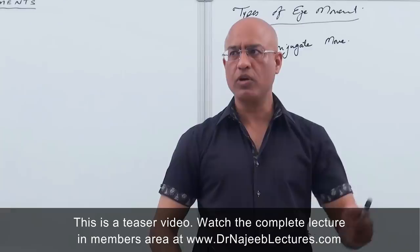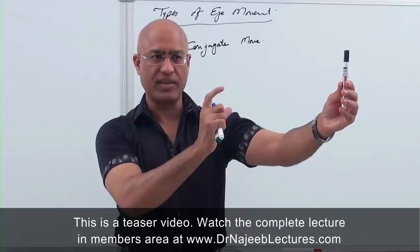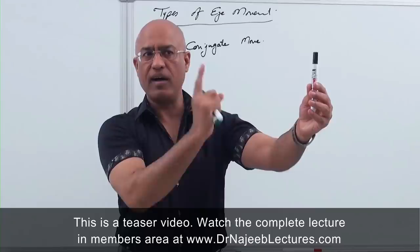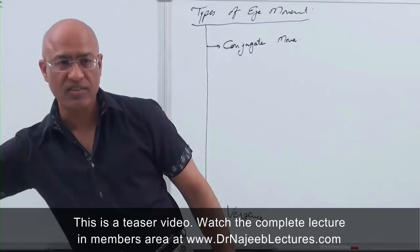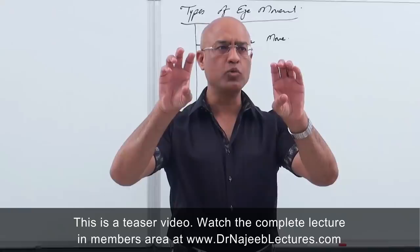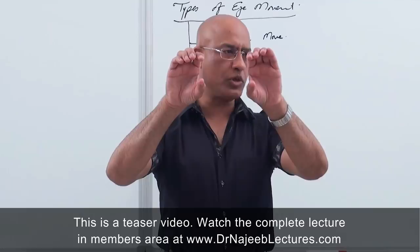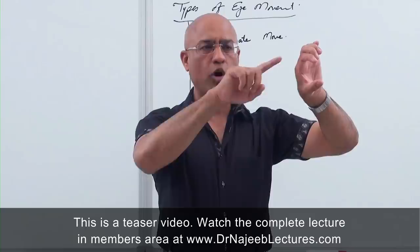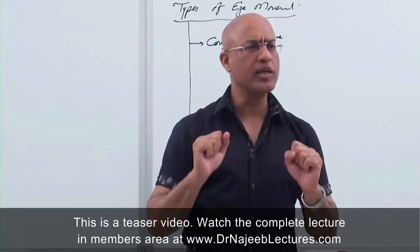If I move the object to the right, then the right eye moves rightward and the left eye also moves rightward — both eyes move rightward to keep focus. In the horizontal plane, eyes can move to right lateral gaze or left lateral gaze. This is one type of conjugate movement.